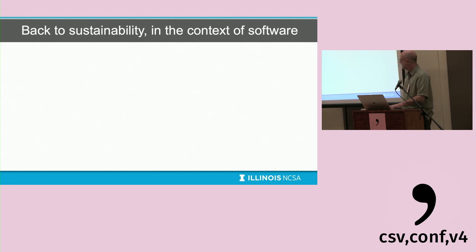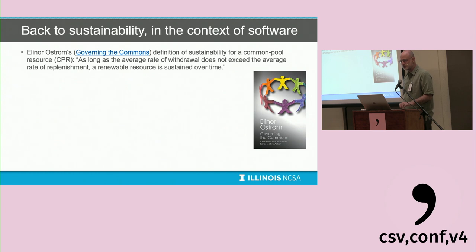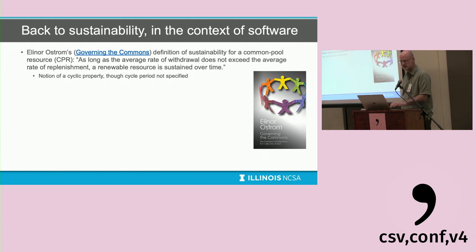Eleanor Ostrom, the Nobel Prize-winning economist, defined sustainability for a common pool resource as: as long as the average rate of withdrawal doesn't exceed the average rate of replenishment, a renewable resource is sustained over time. This makes sense for a reservoir or a pasture — you use some of it, and you let it replenish. It has some notion of a cyclic property, though it doesn't define the period of the cycle or necessarily what is being sustained.